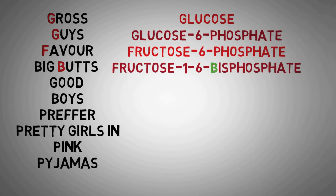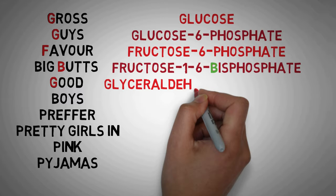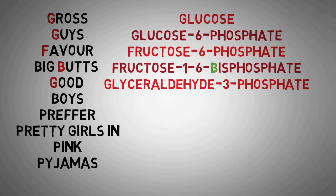Next two words we have in the mnemonic are good boys. The G in good stands for glyceraldehyde 3-phosphate, which is produced when fructose 1,6-bisphosphate is split into two molecules. One is glyceraldehyde 3-phosphate and the second one is dihydroxyacetone phosphate. Only the glyceraldehyde 3-phosphate can move forward with the pathway of glycolysis and not the dihydroxyacetone phosphate. This is why only glyceraldehyde 3-phosphate is included in the mnemonic.